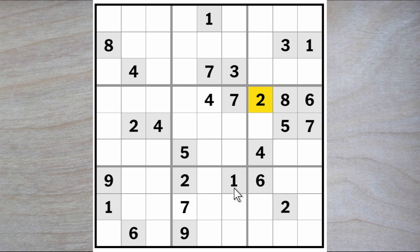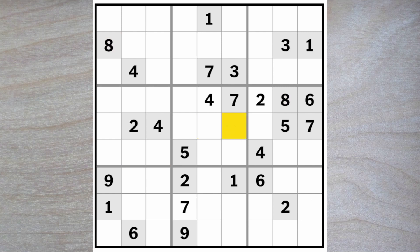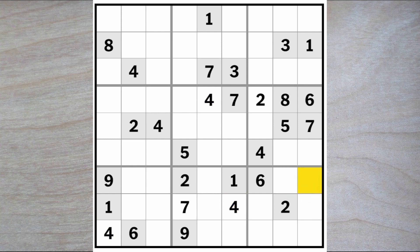We've got a one and a one down here — one of these is a one. And I see an eight blocks down here and eight blocks over there. One of these is an eight, so we need an eight for one of these two squares and nine here and here. A four blocks down and another four blocks down, so this must be a four. And this four blocks down, this four blocks over, so here's another four and then a four must go in one of these two squares here.